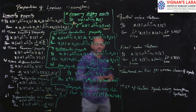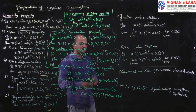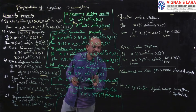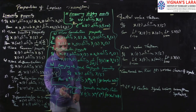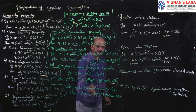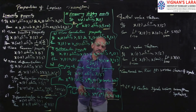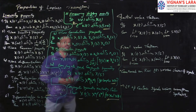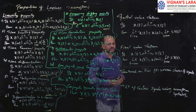Conjugate and conjugate symmetry property: if x(t) has Laplace transform X(s), then x*(t) will have Laplace transform X*(s*) for complex x(t). That is the conjugate property. The conjugate symmetry property states that for real x(t), X(s) will be equal to X*(s*). I already explained all these properties while explaining Fourier transforms. Since these are similar to Fourier transform properties, I have given a brief review.